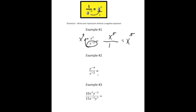Take a look at example number 2: y to the negative fourth over z to the negative second power. This time we have two negatives, so we're going to have to make two different moves. I'm going to draw my fraction bar. Starting with z to the negative second power — to make this a positive, I bring it up, making it z squared on the top. Then to make y to the negative fourth positive, it has to go down to the bottom, making it y to the fourth.